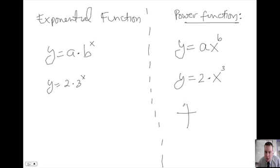If X is 0, you put 0 here. 2 times 0 cubed, 0. Put 1 in here. 2 times 1 cubed is 2 times 1, which is 2.